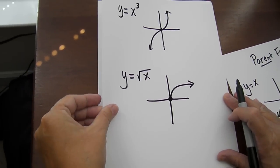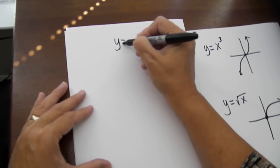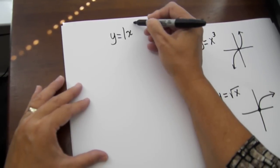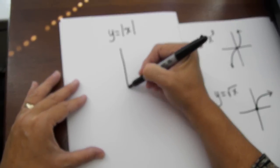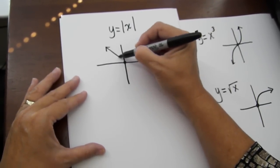And then we also have the absolute value function. The absolute value of X, and it looks like this with its focal point at the origin also.